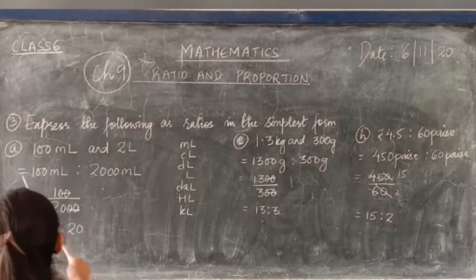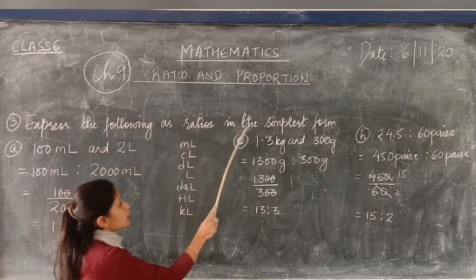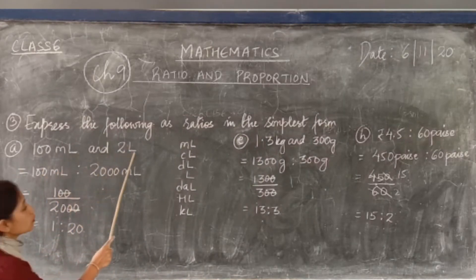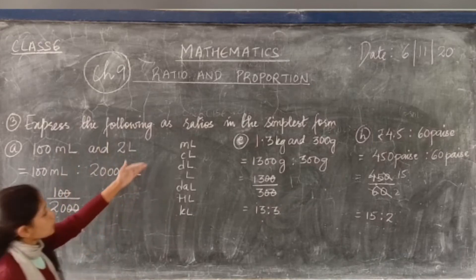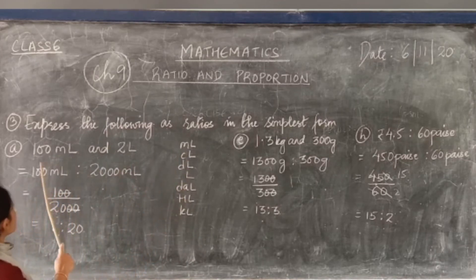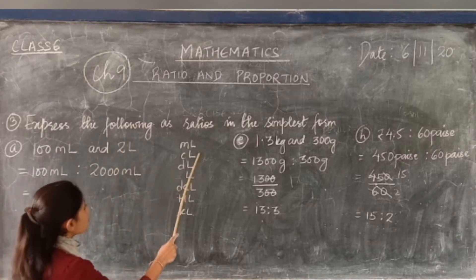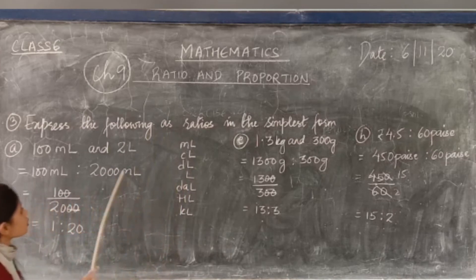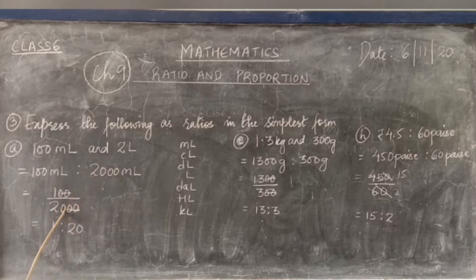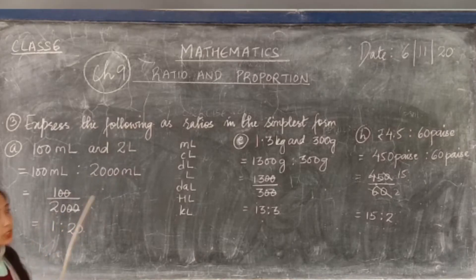Now question number 3: express the following as ratios in the simplest form. First is 100 millilitre and 2 litre. Since one is in millilitres and another in litres, convert litres to millilitres — 1 litre is 1000 millilitres, so 2 litres is 2000 millilitres. Write 100 divided by 2000, cancel the zeros, and you get 1 is to 20.